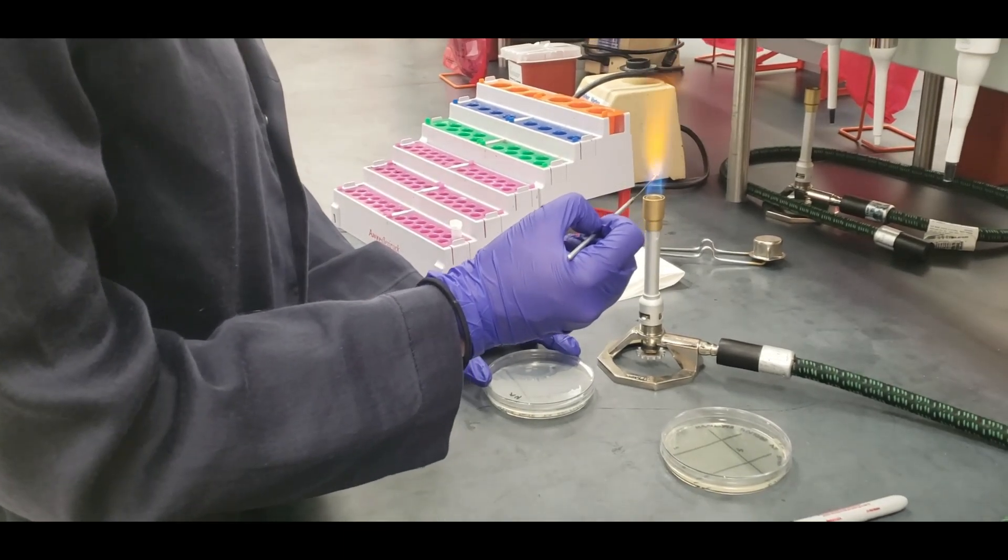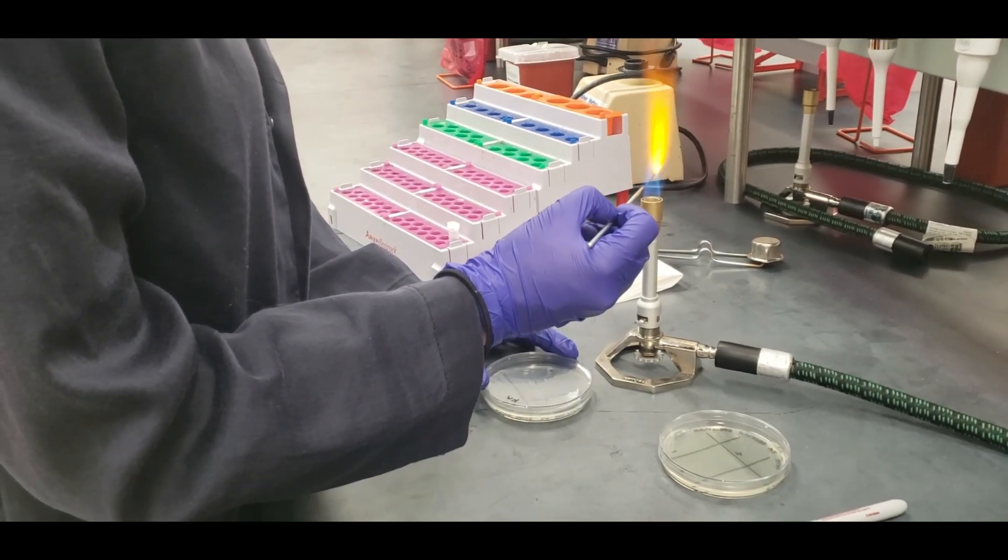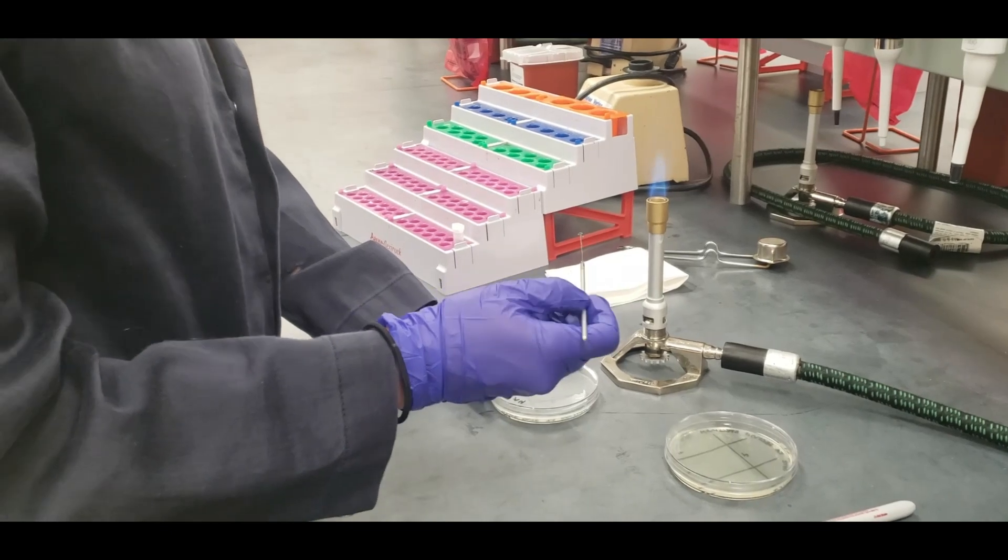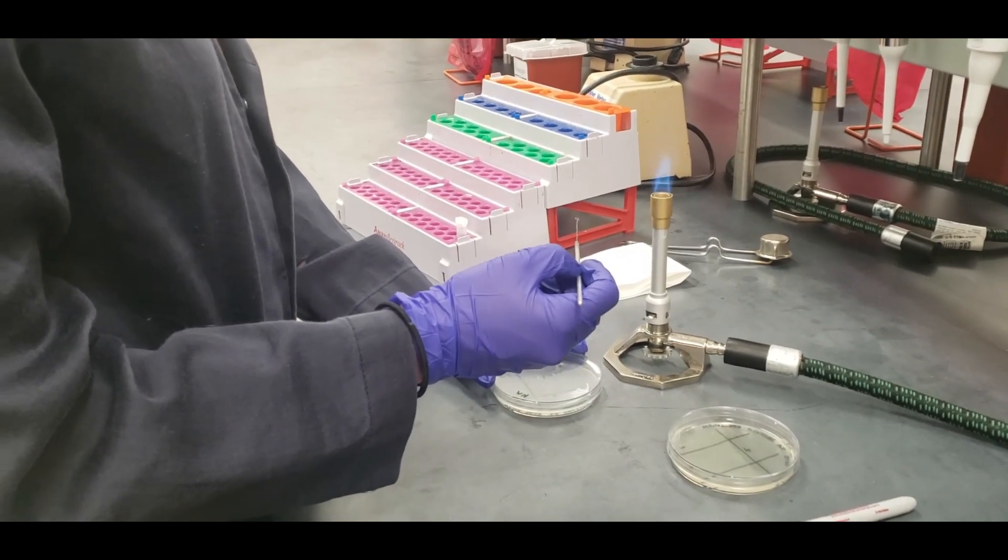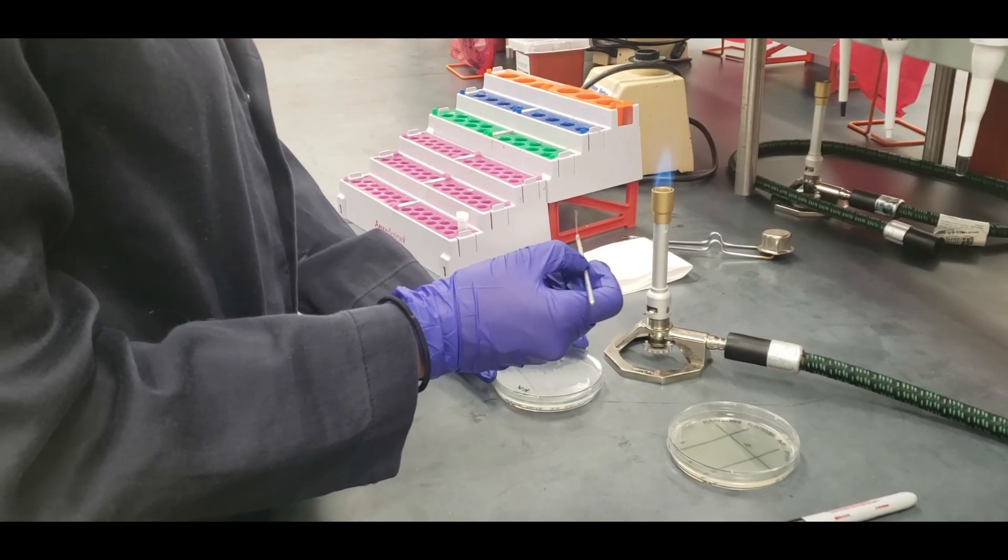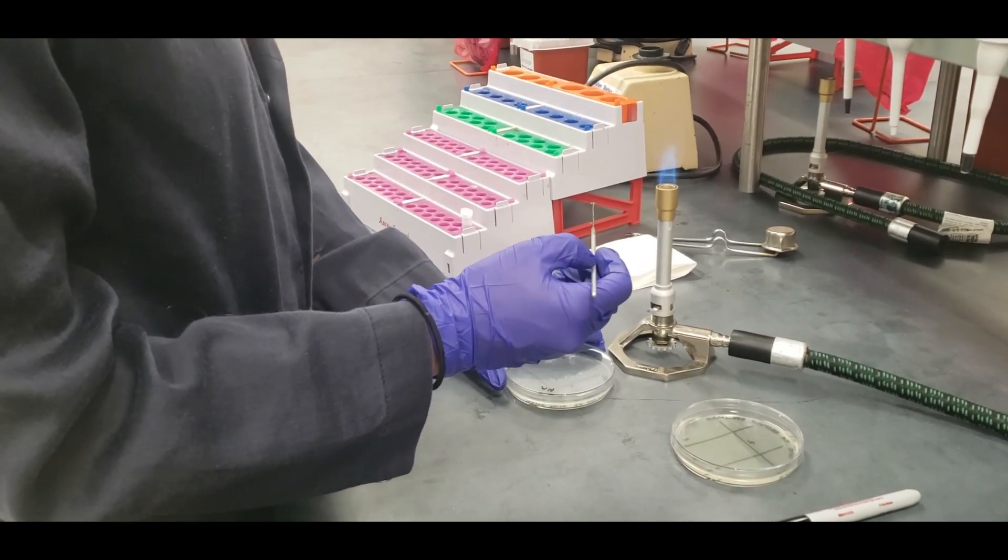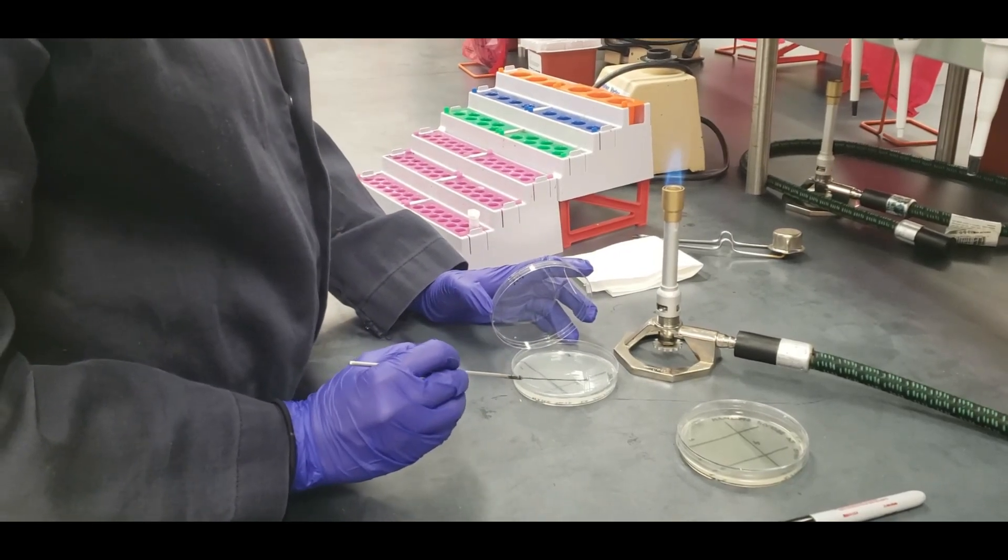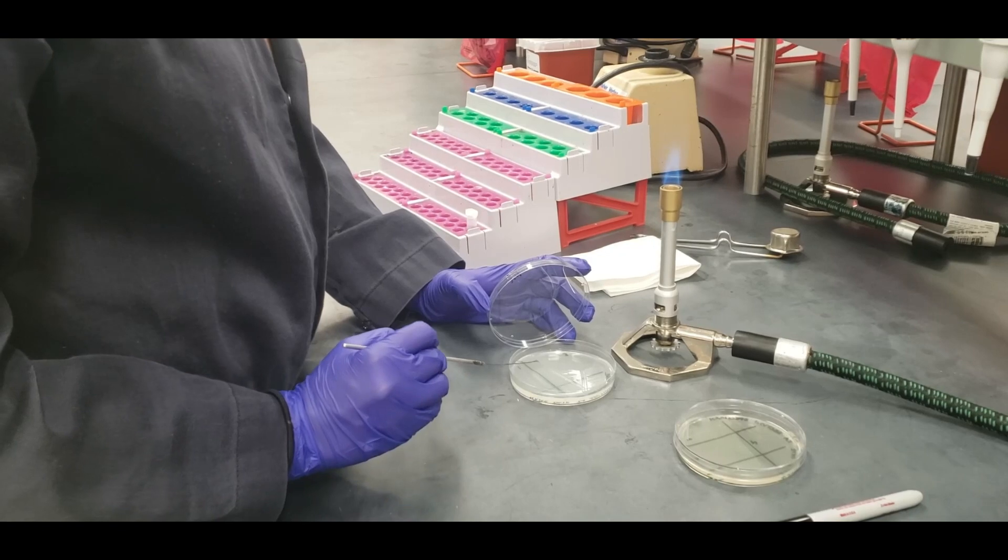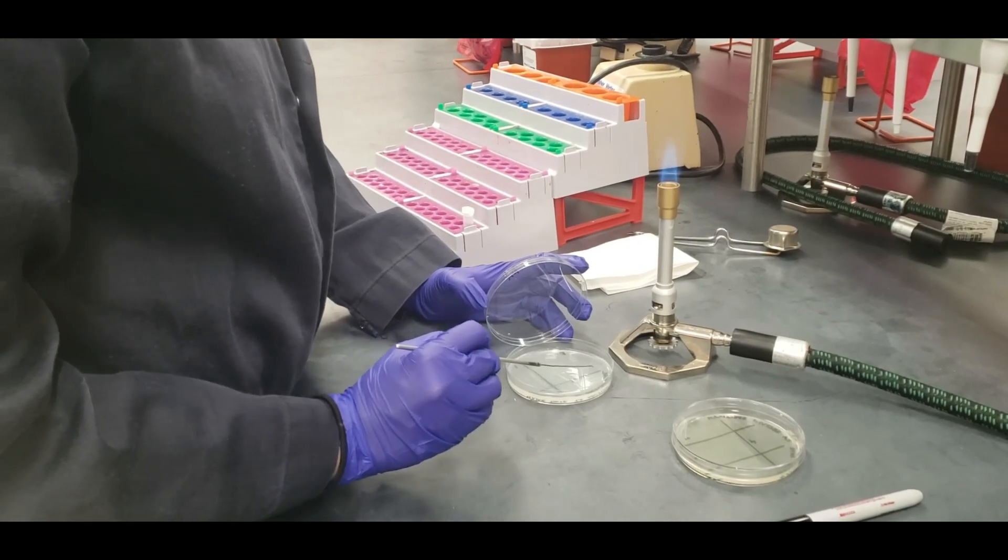Sterilize your loop again, letting it cool down completely. Then, you're going to pull one time from the second section into the third section, and then flame your loop.